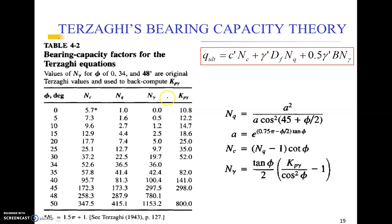Nc, Nq, and N gamma factors - this is used to back compute the Kp gamma value. This is the factor which is called Kp gamma. The bearing capacity factors for Terzaghi's equation: values of N gamma for phi of 0, 34, and 48 degrees are original Terzaghi values and used to back compute Kp gamma values. You can see that the Kp gamma factor is over here. It's again a geometrical factor.